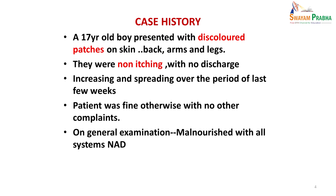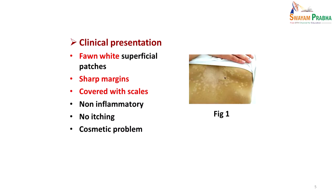The patient was fine otherwise with no other complaints. On general examination it was noticed the patient was malnourished with all other systems showing no abnormality. On examination, there were fawn-white superficial patches seen on the back and other areas of the skin with sharp margins, and when rubbed you would see dry white scales coming off them. These were non-inflammatory, non-itching — basically a cosmetic problem.